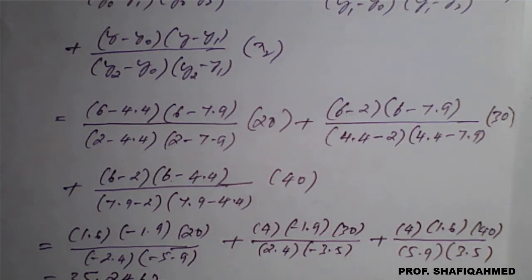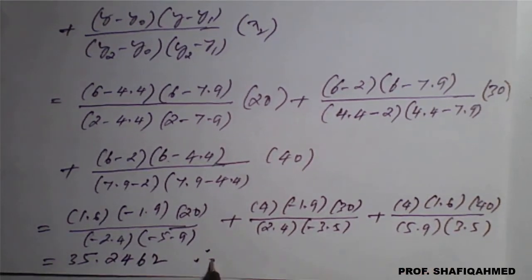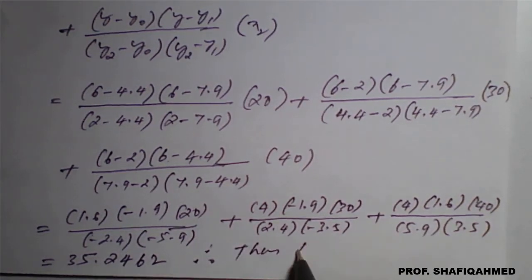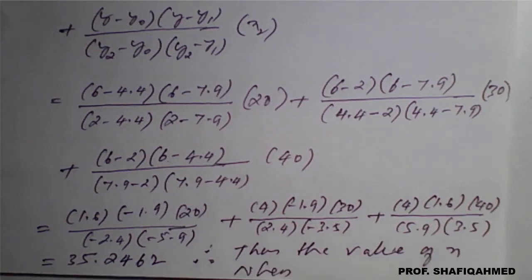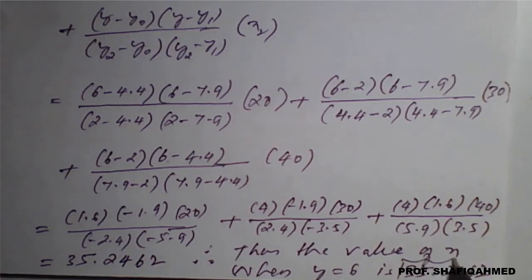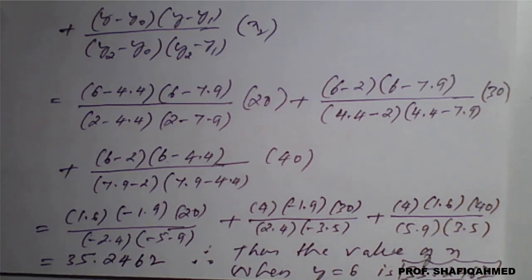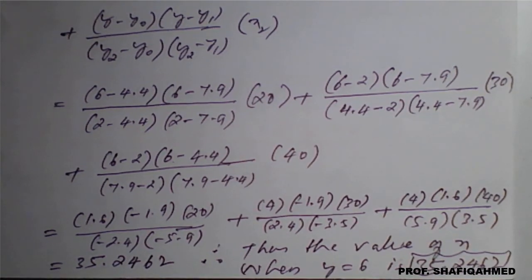Therefore, thus the value of x when y is equal to 6 is 35.2462. In this way, we can solve a problem using Lagrange's inverse interpolation formula.